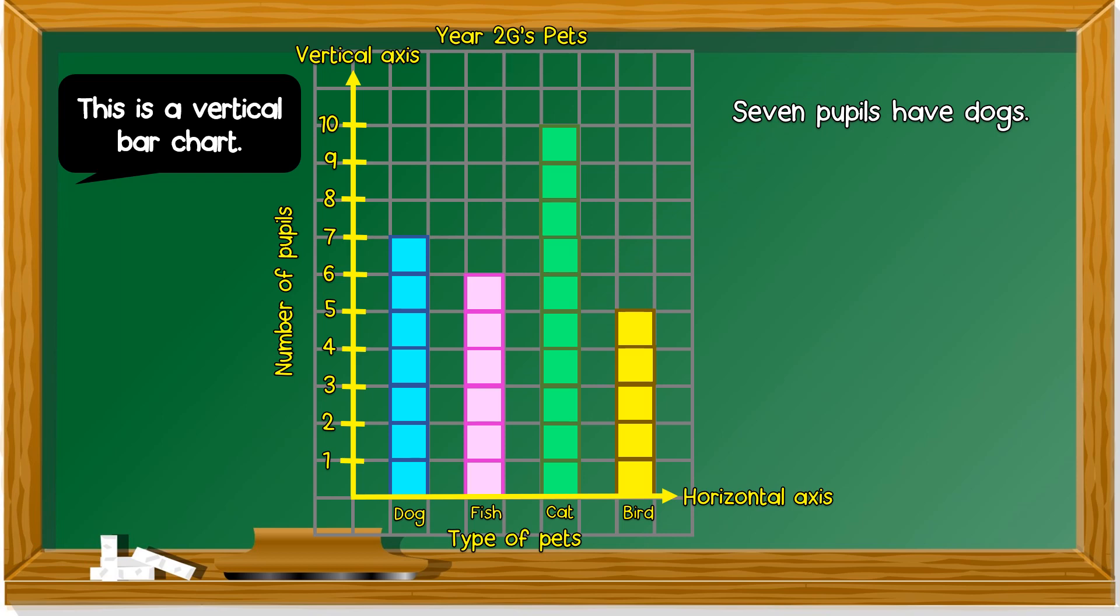There are seven boxes, right? You see? Up until number seven here. Here. How about fish? How many pupils have fish? Fish is until here. This is six. Six. So six pupils have fish.